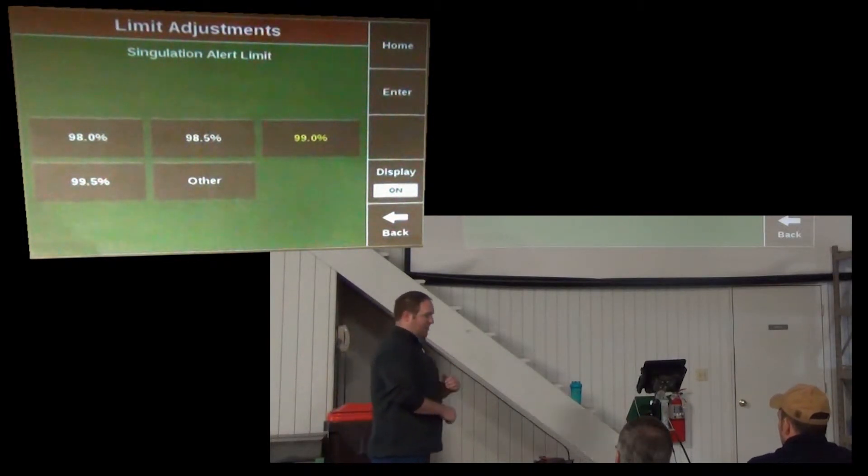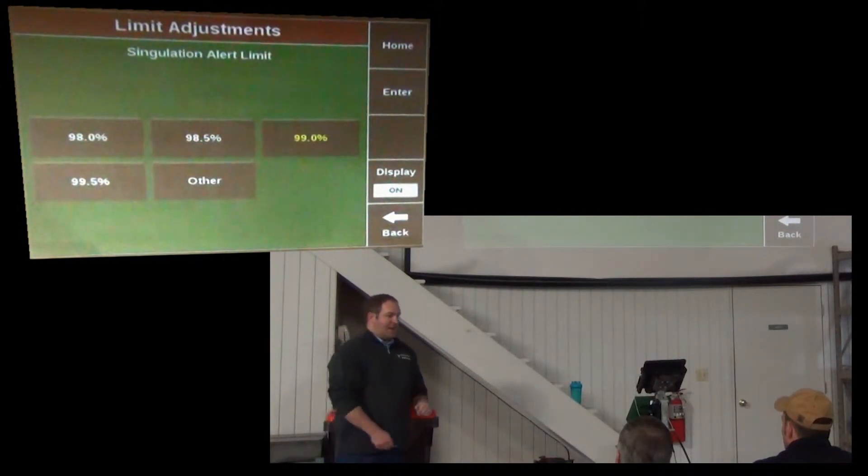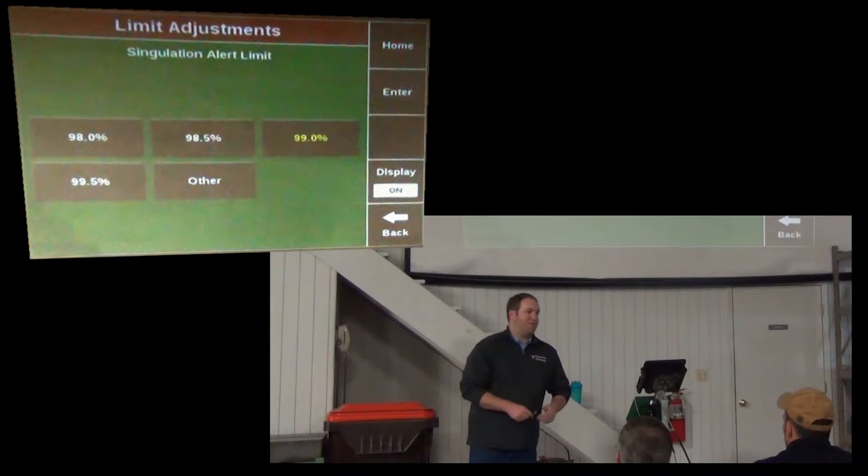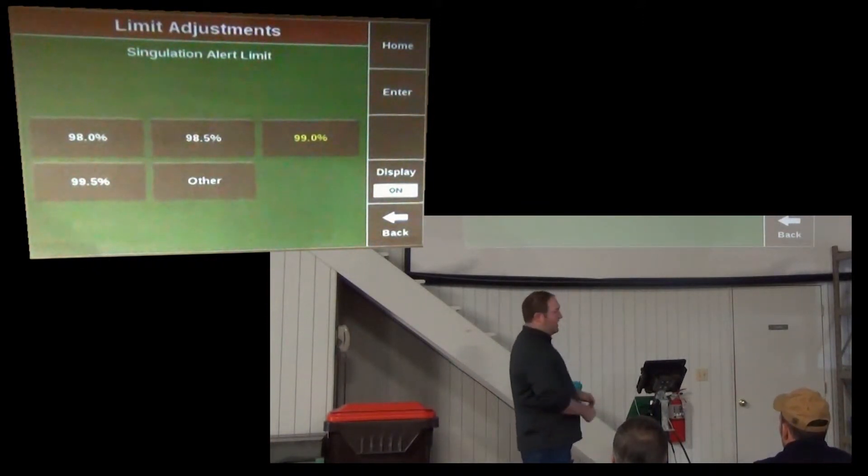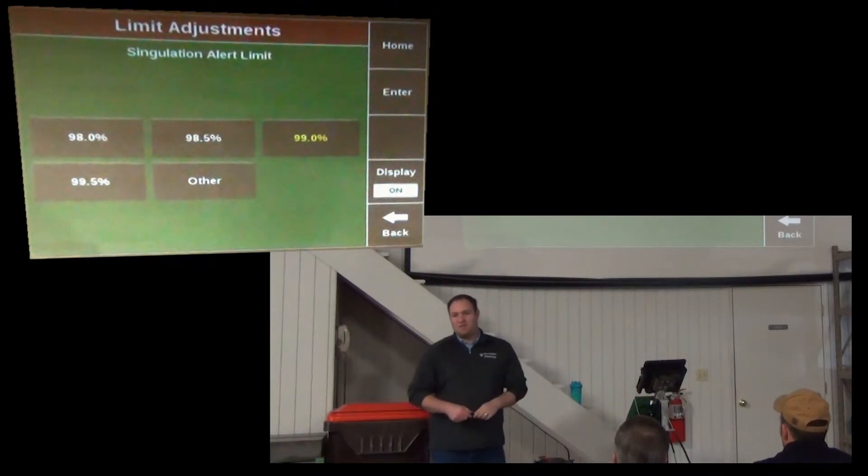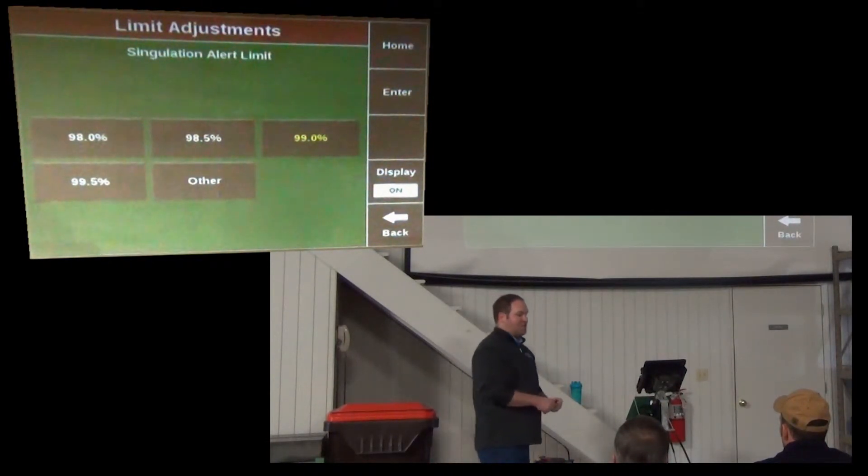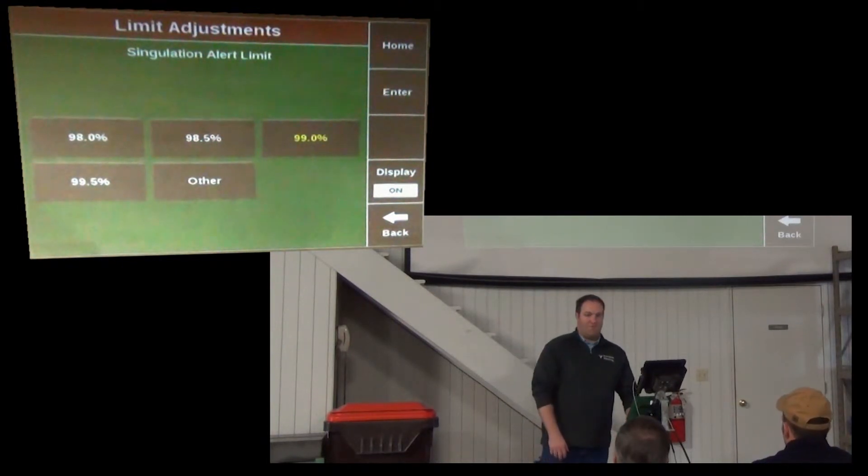V-sets should singulate above 99 at a time. Now, if I have a finger planter and I have this set at 99, because the finger planter has more variation to it, that singulation box just might be yellow all the time. And if that's the case, that's not doing me much good. If it's constantly yellow and then one row drops 3%, it's still yellow. There's no change.